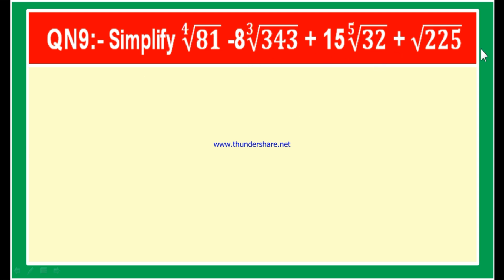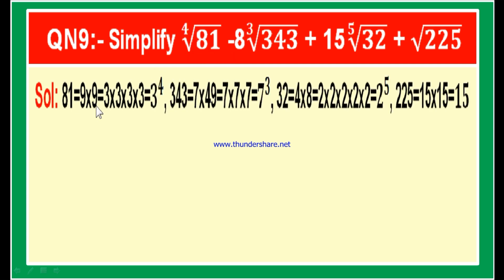In order to simplify this, let us factorize the numbers 81, 343, 32, and 225. First, 81 is 9 into 9, and each 9 is 3 into 3, so 81 equals 3 power 4. Next, 343 is 7 into 49, and 49 is 7 into 7, so 343 equals 7 cubed. Then 32 is 4 into 8, giving 2 power 5. And 225 is 15 into 15, which is 15 squared.